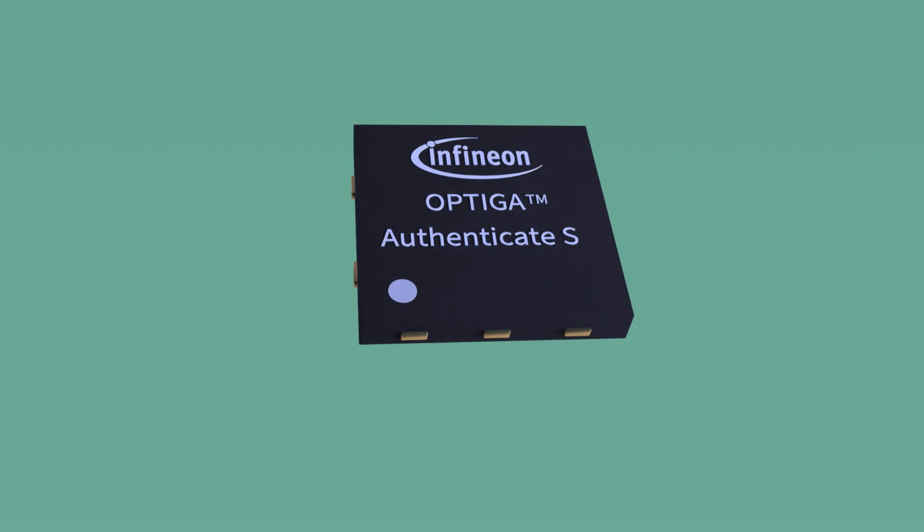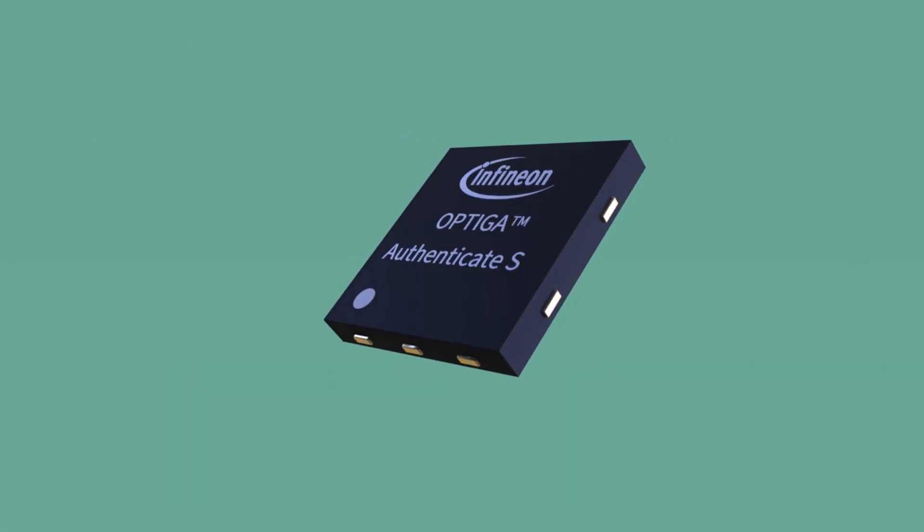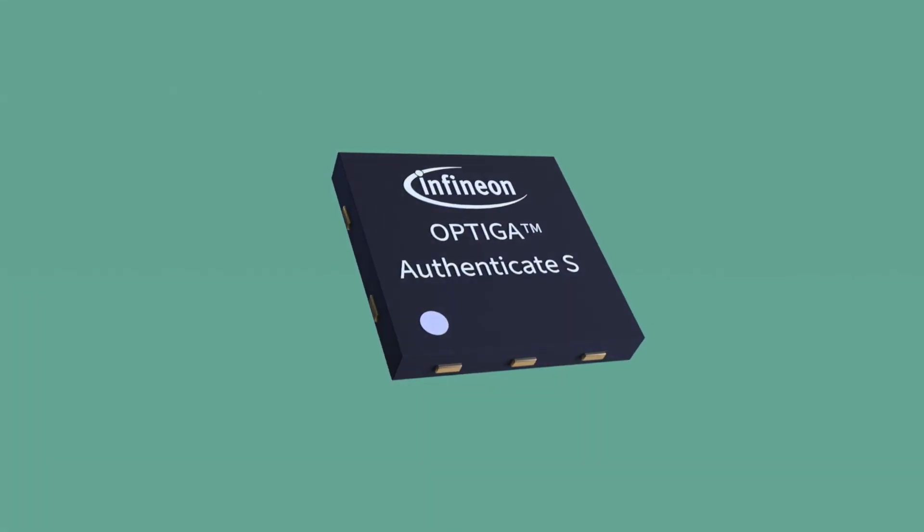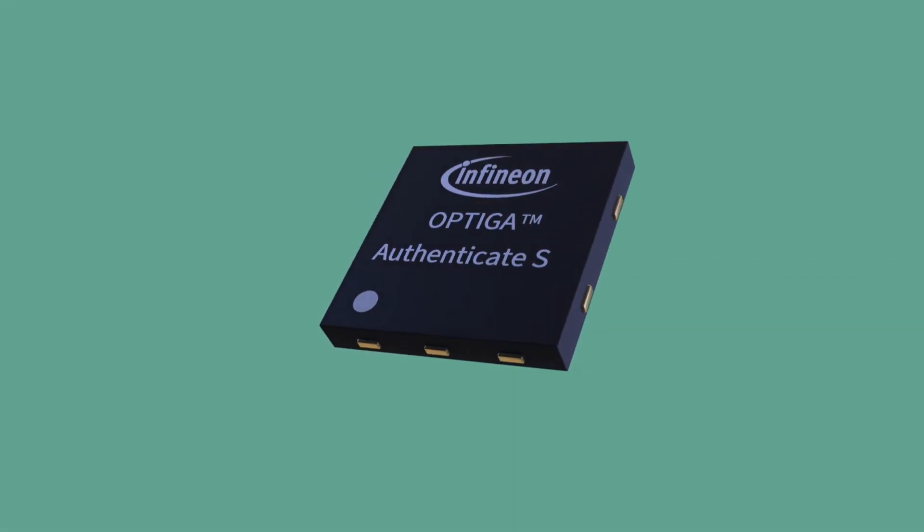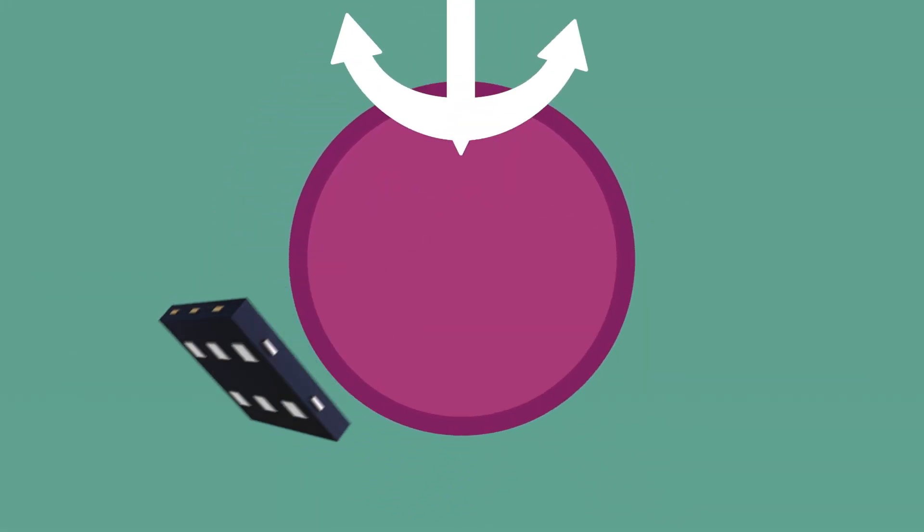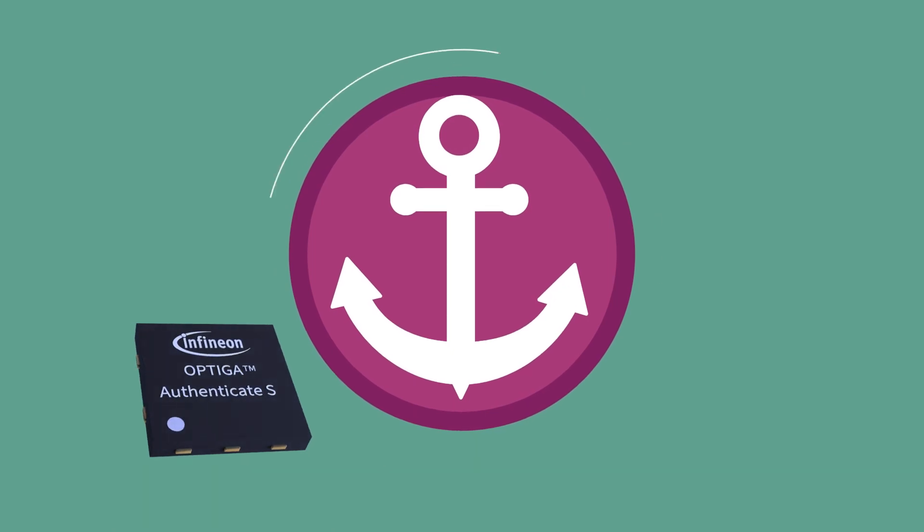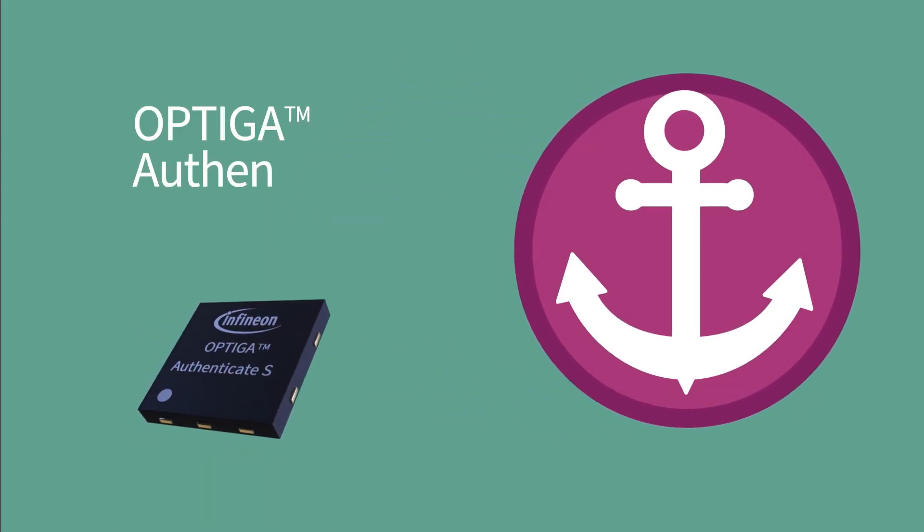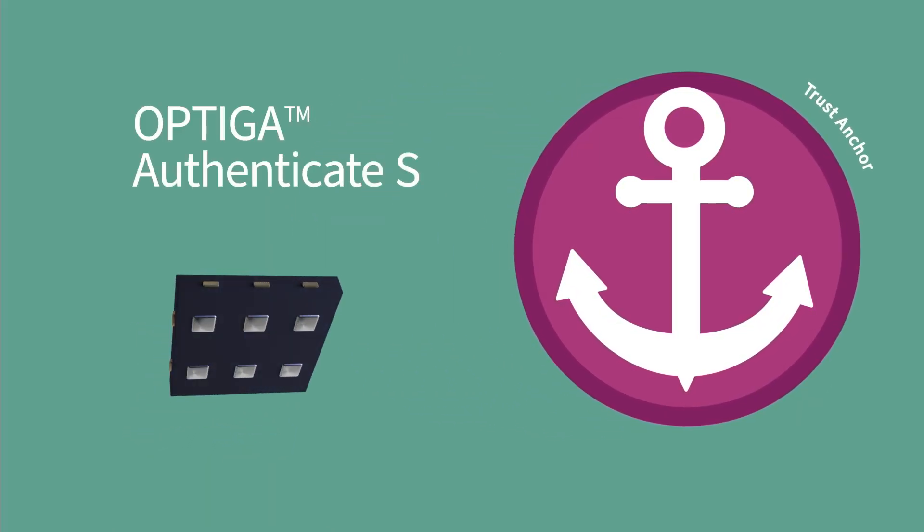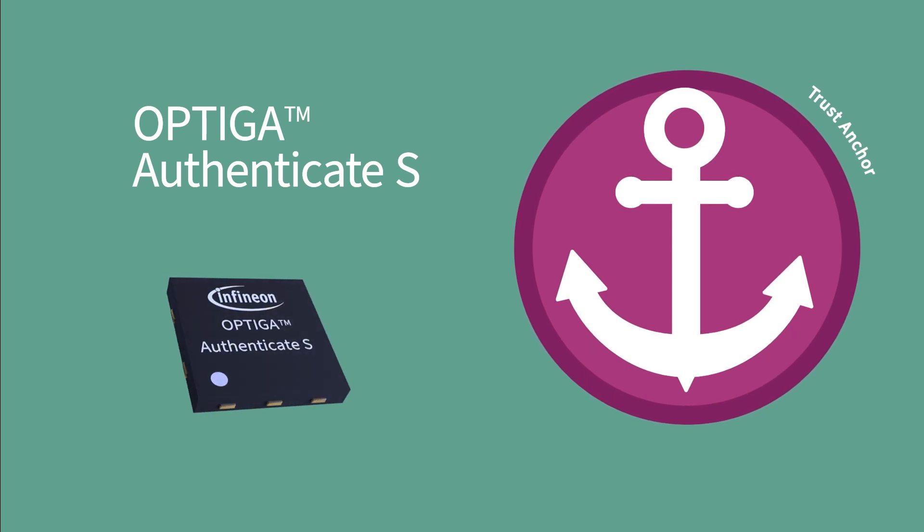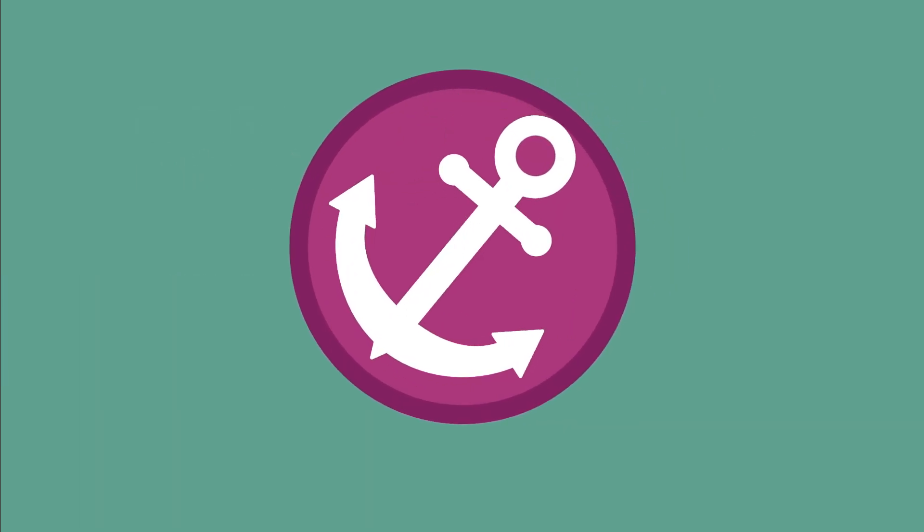The new Optiga Authenticate S gives things a unique identity to verify their authenticity. Optiga Authenticate S is a turnkey embedded security solution, also commonly called a trust anchor. It clearly outperforms typical security software solutions running on microcontrollers or dedicated memories.